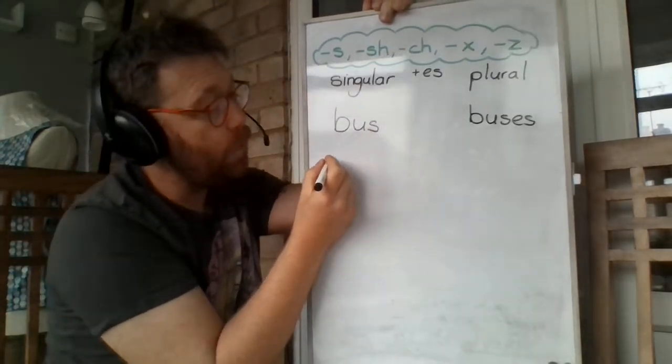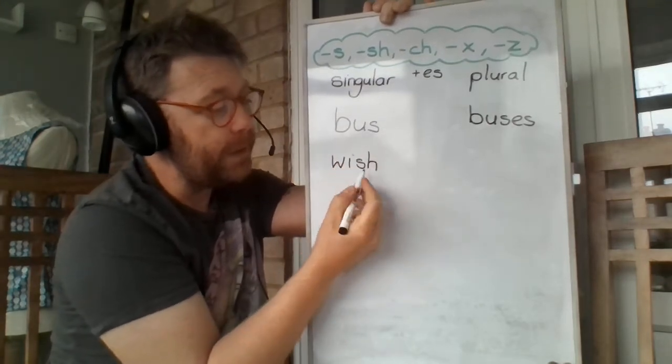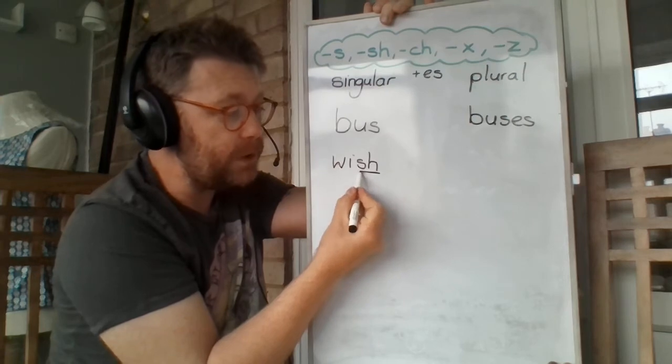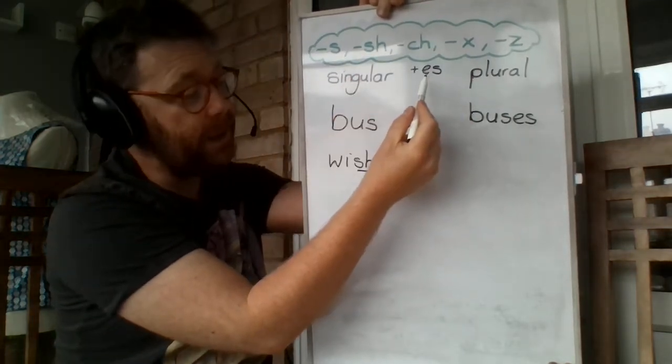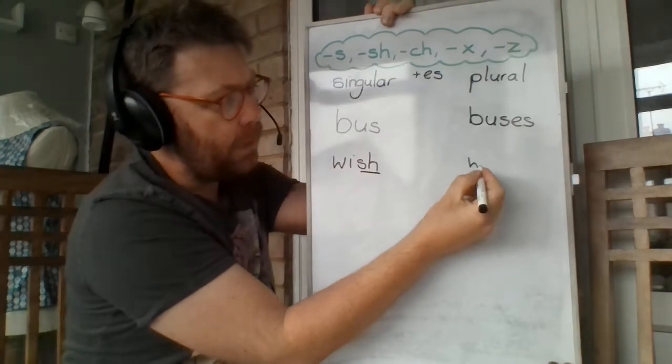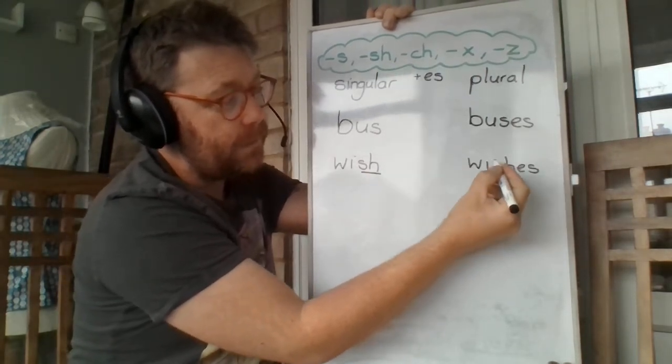Next word, wish. I've got one wish. But can you see it ends with SH here, which is up here in our list. So we have to add ES. I've got lots of wishes.